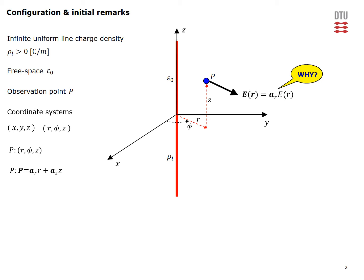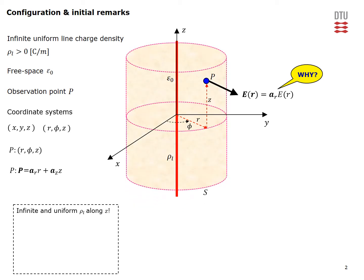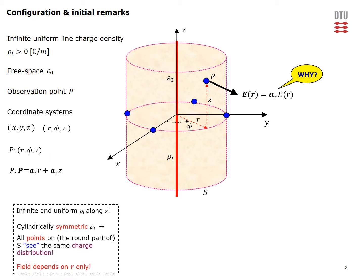We now argue why this is so. Because the line charge density is infinite and uniform along z, the field cannot depend on the z coordinate. Regarding the phi coordinate: consider surface S on which the observation point lies. Due to the cylindrical symmetry of the charge configuration, all points on this surface see the same charge distribution, so the field is independent of phi. We conclude the field depends only on the radial coordinate — the distance from the charge to the observation point.